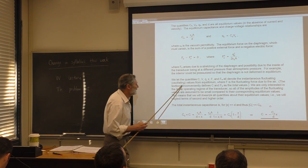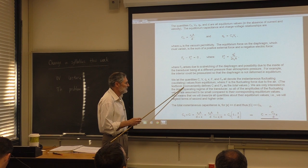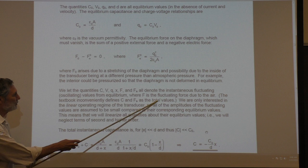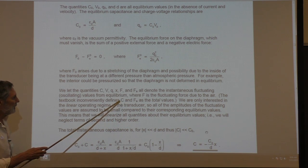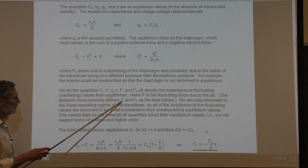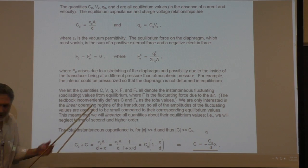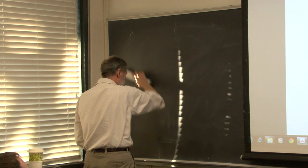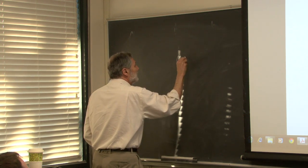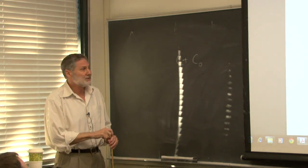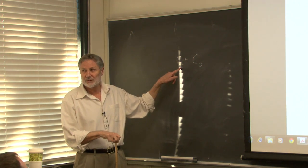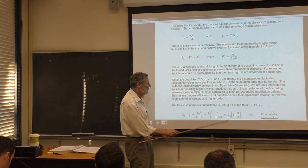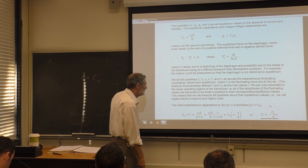The textbook defines c and Fₑ as total values — we're not going to do that. We'll write the total capacitance simply as C₀ plus c, recognizing the equilibrium part plus the fluctuating part. Be aware if you compare this to the book, I've deviated from that derivation.